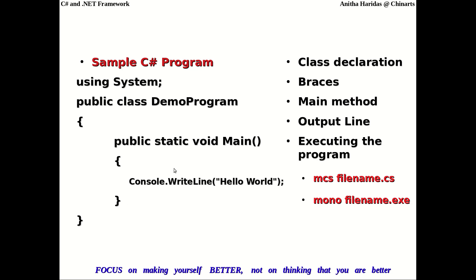Console.WriteLine is the output statement used for producing output. You will have a Main method — notice it is defined with a capital M. In C++ and Java we use a lowercase m, but in C# we use capital M because C# follows the convention that all class names and method names begin with a capital letter. If a name has more than one term, like DemoProgram, both D and P are capitalized.